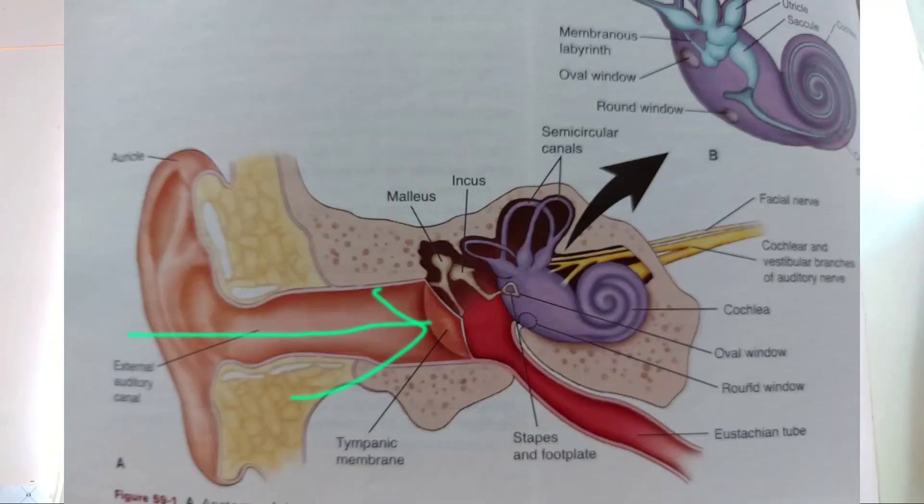What is conductive hearing loss? In conductive hearing loss, the passage of sound is blocked either in the external auditory canal or in the middle ear. So the sound is blocked and will not go to the inner ear.